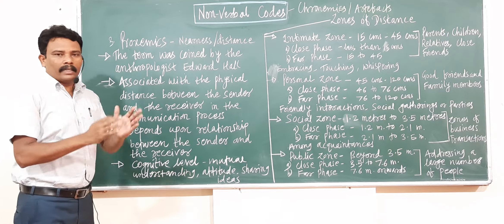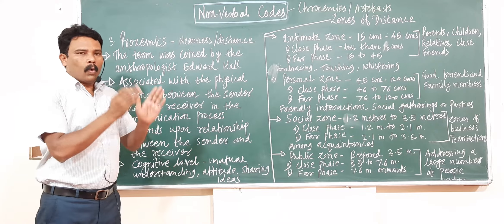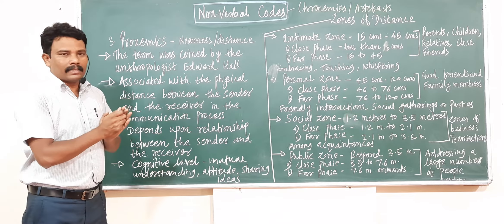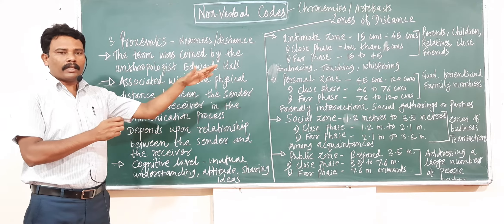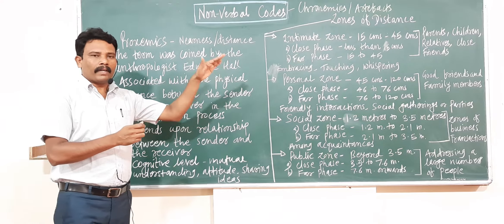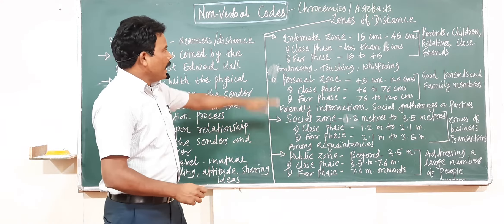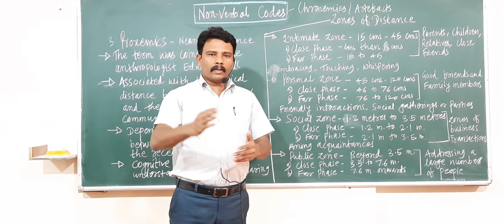It is a very important non-verbal code. As we already discussed, Chronemics means manipulation or utilization of the time factor in the communication process, and Artifacts means utilization of or influence of man-made objects on the communication process.